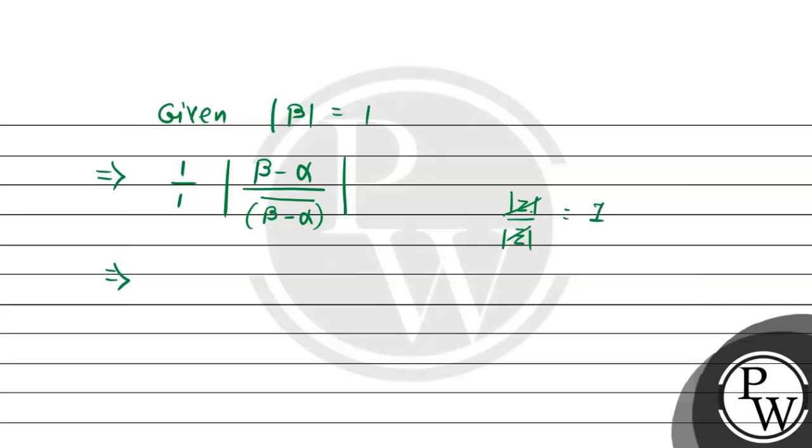We will take beta minus alpha mode, we will take 1 to 1. So here will come modulus of beta minus alpha divided by modulus of beta minus alpha bar mode over. So both modulus will be same. That is equal to 1 we will get.